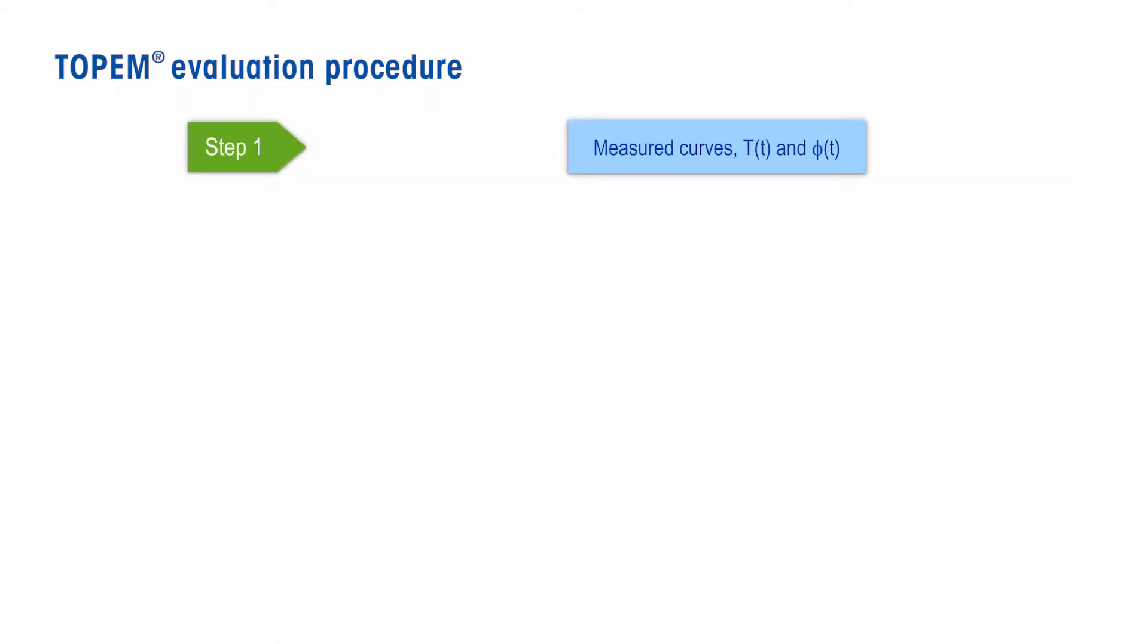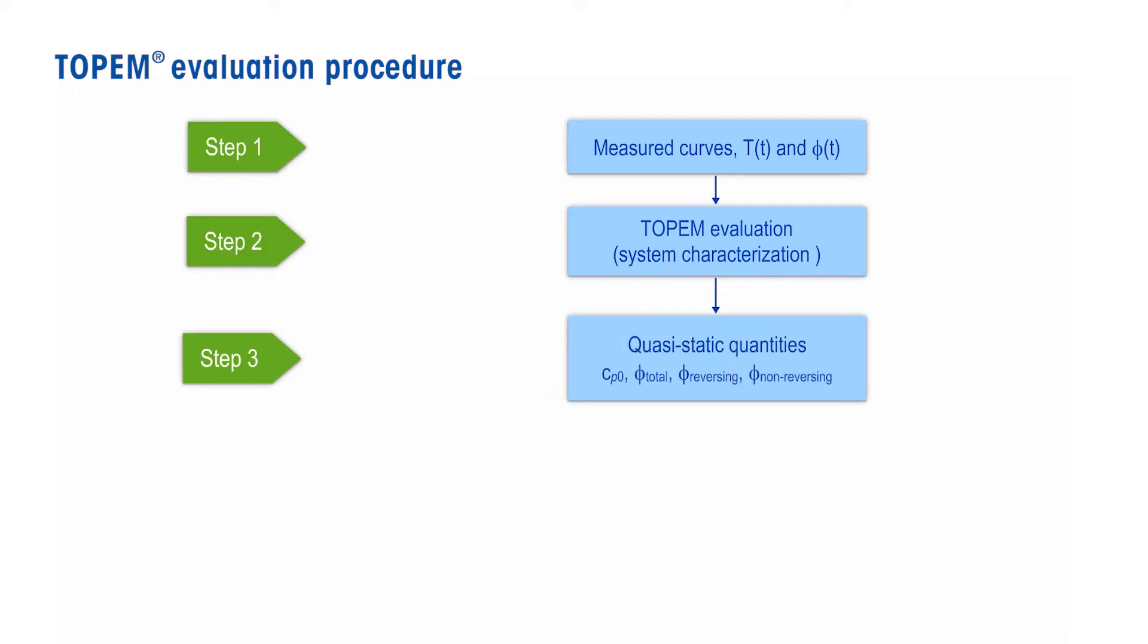Step 1: Perform a sample measurement by Topham. Step 2: Characterize the system with respect to its frequency behavior. Step 3: Calculate the quasi-static-specific heat capacity and the reversing, non-reversing, and total heat flows.